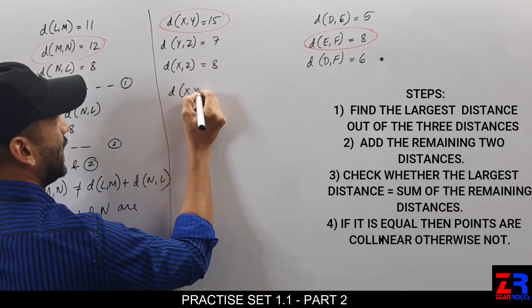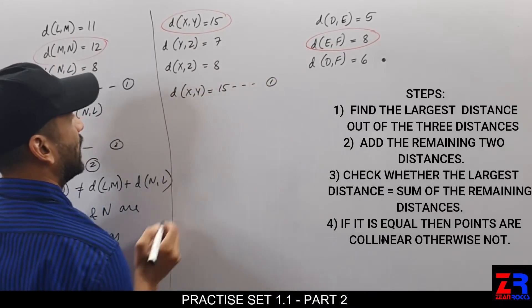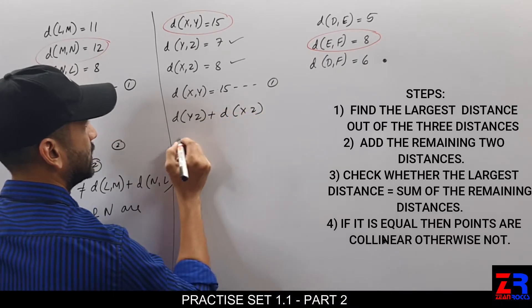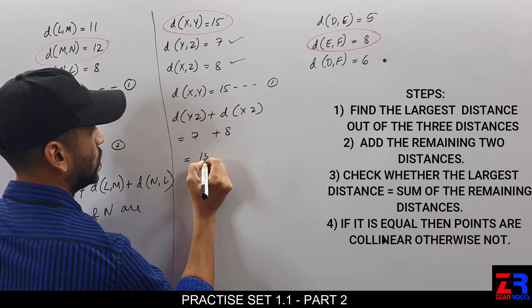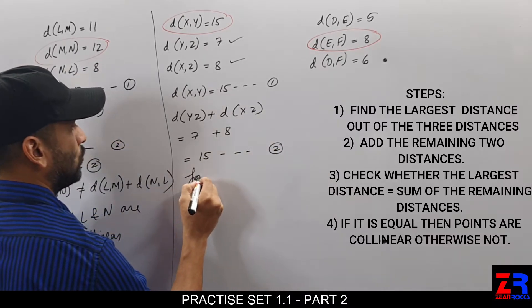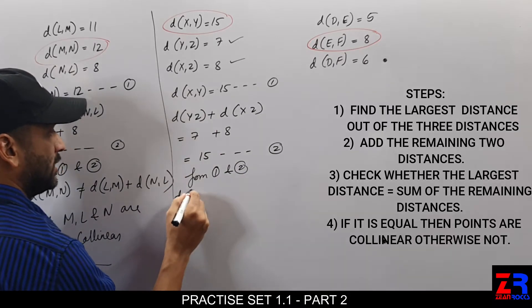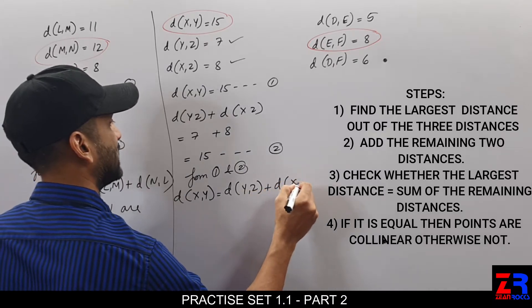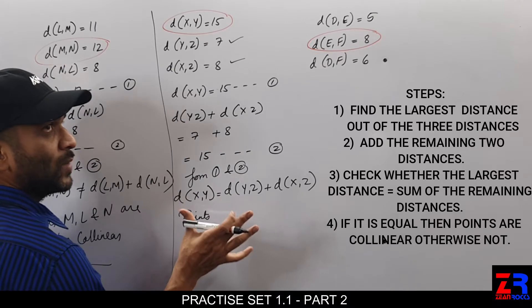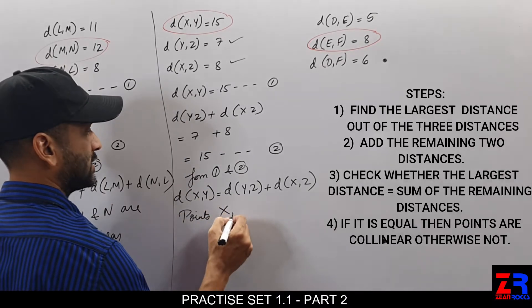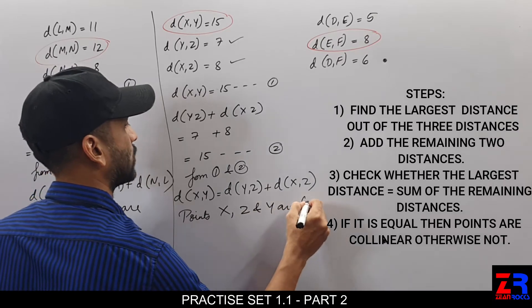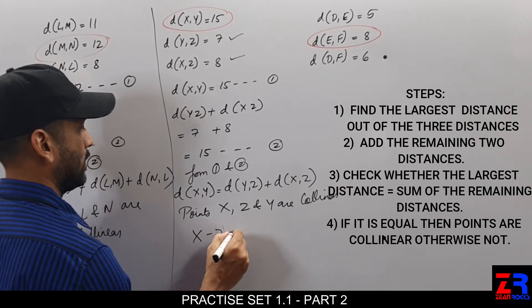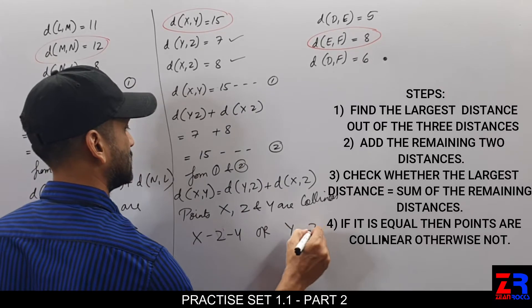Next, distance XY is equal to 15 (equation 1). We check the other two sides: distance YZ plus distance XZ equals 7 plus 8, which is equal to 15 (equation 2). From 1 and 2, distance XY is equal to distance YZ plus distance XZ. That means XY is the biggest side, so Z lies in between X and Y. Points X, Z and Y are collinear. The betweenness is X–Z–Y or Y–Z–X.